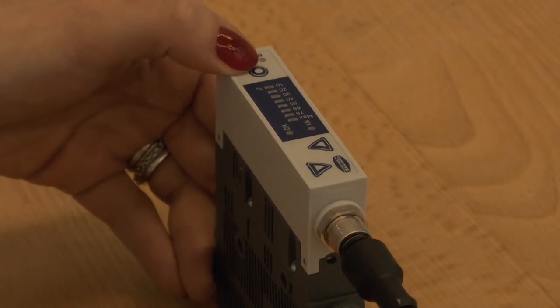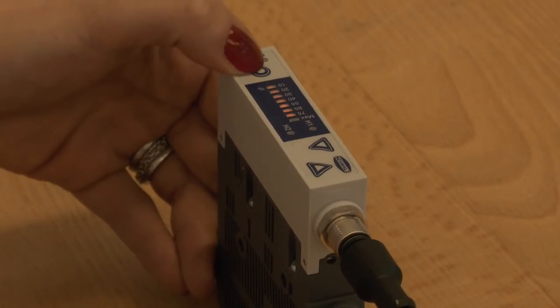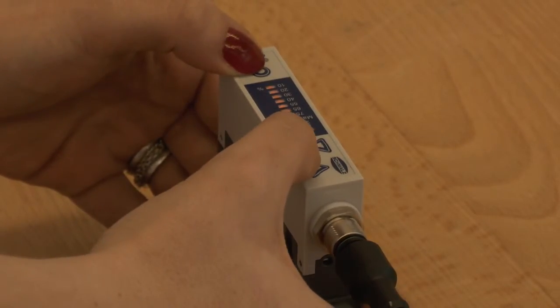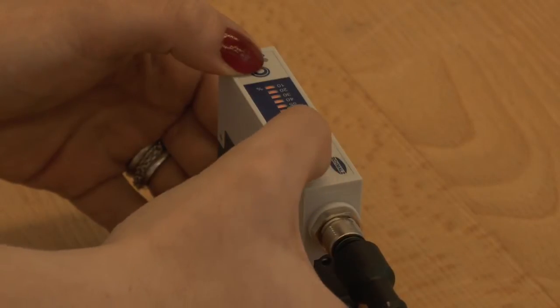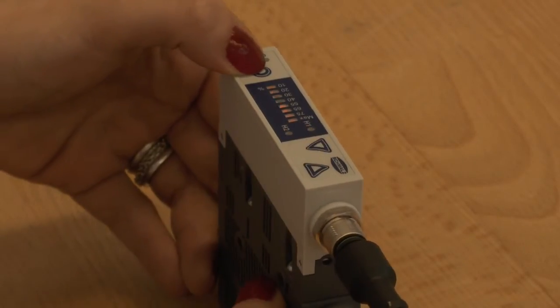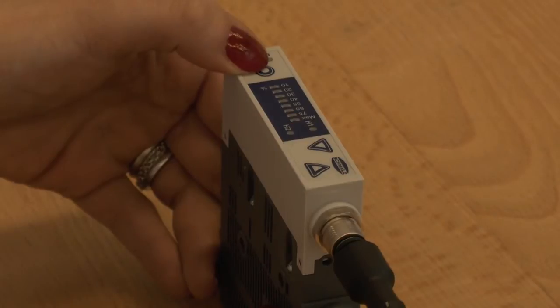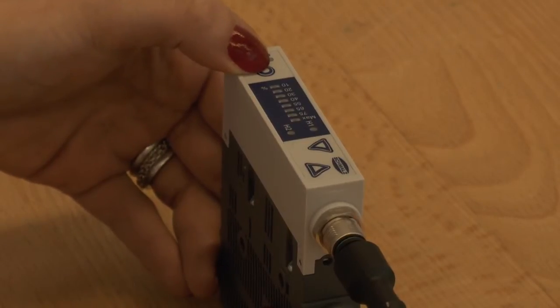By setting H1 to maximum, the air-saving function is deactivated. Manual blow-off can be achieved by setting the blow-off time to zero.